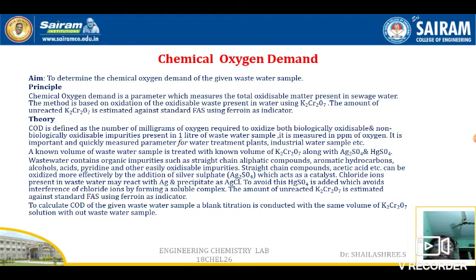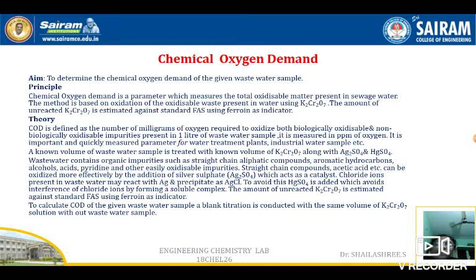Why are we using silver sulfate? Because silver acts as a catalyst in oxidizing some of the organic compounds which are difficult to oxidize. When we use the catalyst, they will be oxidized easily. Even in water samples, chloride ions will frequently be present, and they should not interfere in the experiment. So, to bind the chloride ions, we add mercuric sulfate.